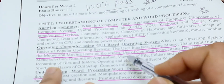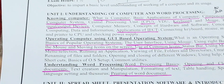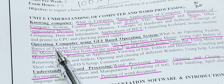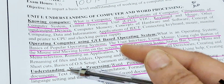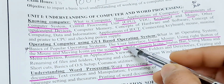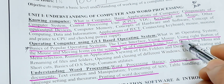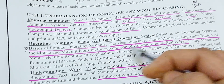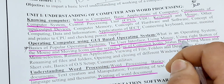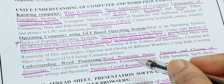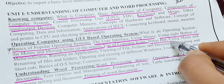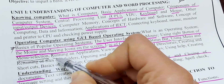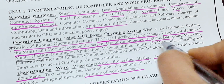Moving on, also in Unit 1 we have the topic: operating computer using a GUI-based operating system. Basics of popular operating systems is important here. Then the user interface — using the mouse, using the right button of the mouse, moving icons on the screen, use of common icons, and the status bar — all of these are included. If you want to elaborate your answer, you can also note: using menu and menu sessions.